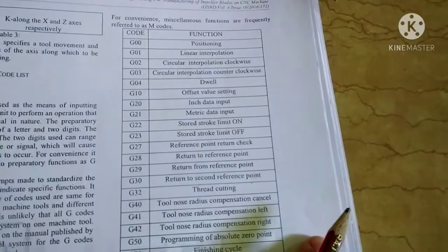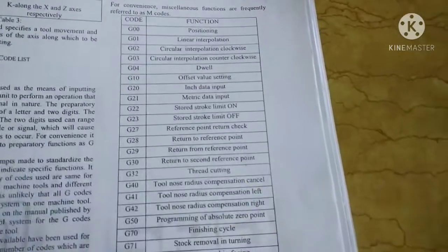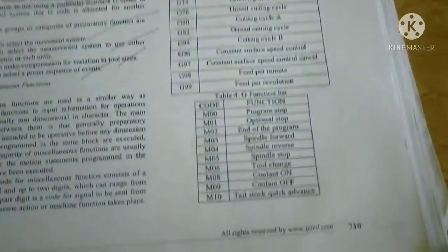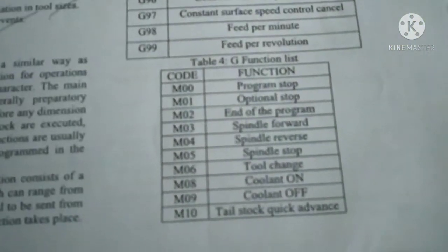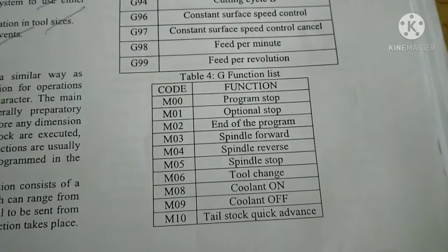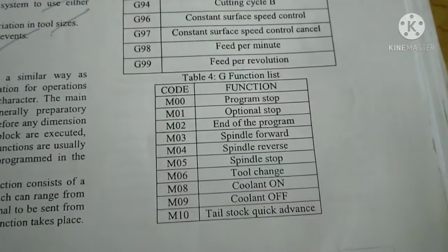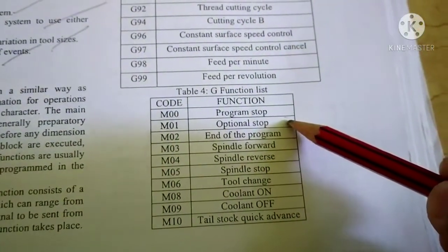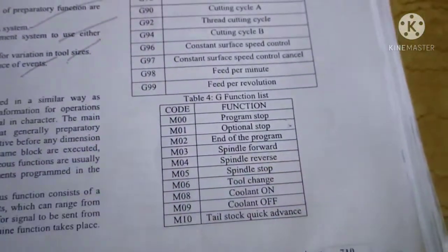G-codes are used for linear programming, grooving, threading, cutting, and feed. Next is M-codes. M01 means optional stop, M00 means program stop, and there's spindle forward and spindle reverse.